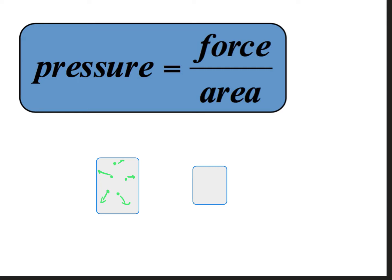Now if I take those same five particles and distribute them in a smaller container, the same forces are going to be applied to the sides of the container, but the area is going to be significantly smaller. So the pressure inside this container is going to be higher than in the container that has a larger area or a larger volume.